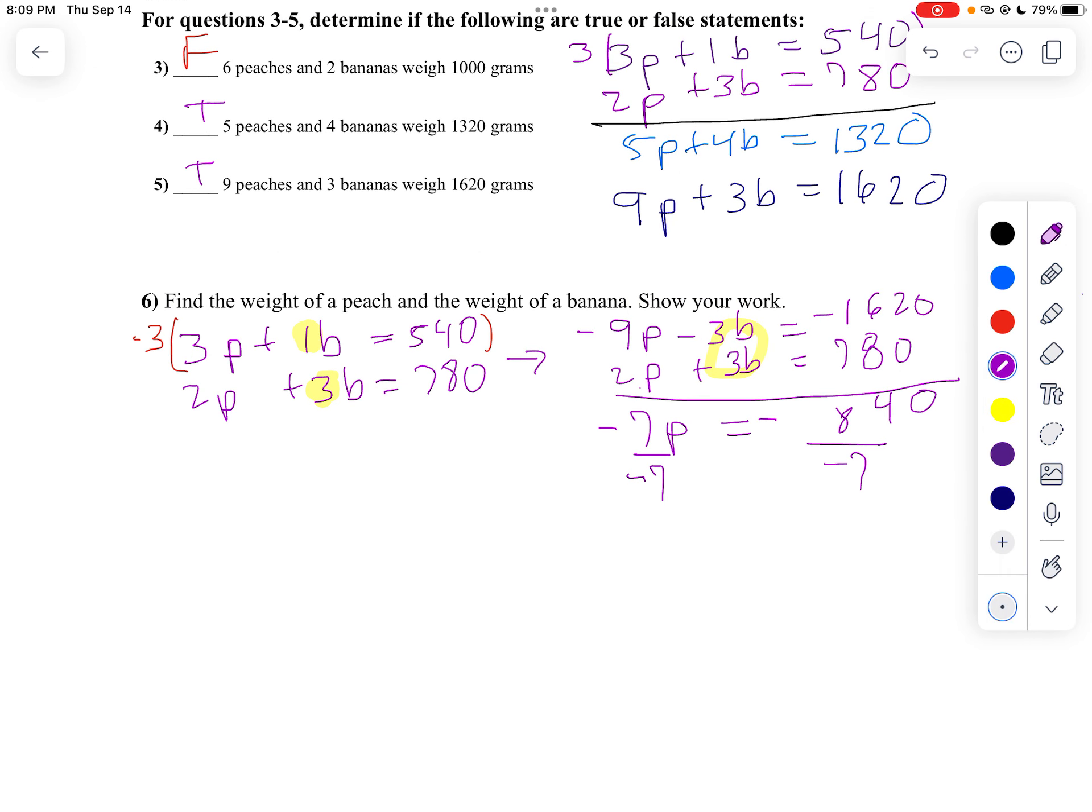So I know P is 120. Then, I think I'll use my first equation. So I'll go 3 times P, which is 120, plus B equals 540. Well, 3 times 120 is 360, plus B equals 540. Well, then, let's subtract 360 from both sides.